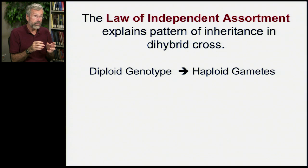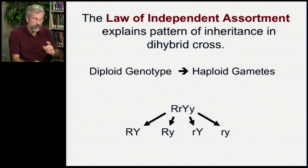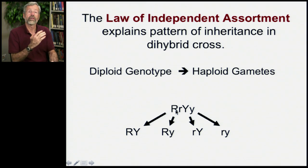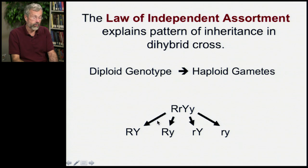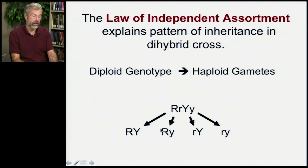We start out with a diploid genotype, and then during meiosis we get haploid gametes. In our F1 generation of this dihybrid cross, they were heterozygous for round versus wrinkled and also heterozygous for yellow versus green. These two different traits are going to be passed on in the gametes independently. So after meiosis, all four combinations — capital R with capital Y, capital R with little y, little r with capital Y, and little r with little y — are equally likely. That's the Law of Independent Assortment.